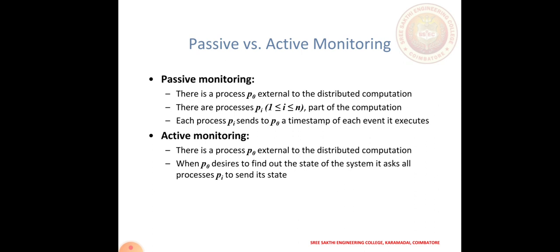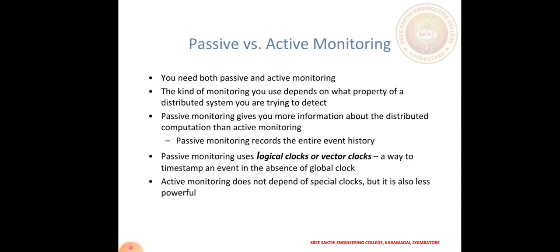Active monitoring: process P0 is external to the distributed computation. When P0 desires to find out the state of the system, it sends tasks to P0 and one to states. For passive monitoring, you need both passive and active monitoring. The kind of monitoring used depends upon what properties of the distributed system you are trying to detect. Passive monitoring gives more information about the distributed computation, using logical clocks or vector clocks — a way of timestamping events in the absence of a global clock. Active monitoring does not depend on clock cycles but is less powerful.